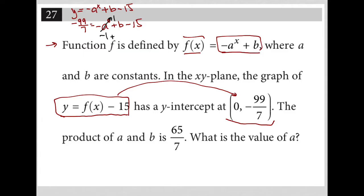So I'd have negative 1 plus b minus 15 equals negative 99 over 7. Simplifying further, I'd have negative 99 over 7 equals b minus 16.